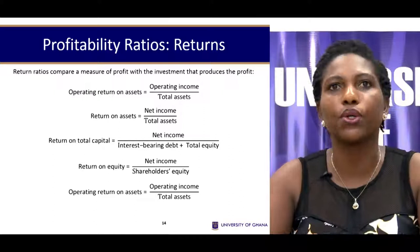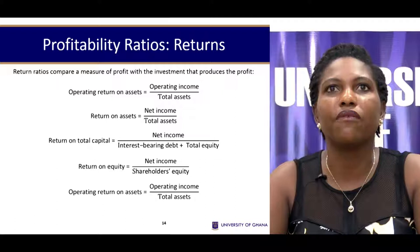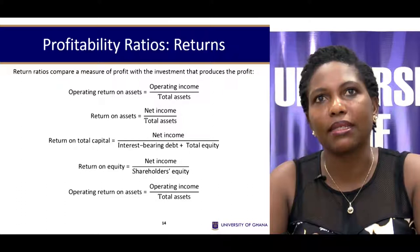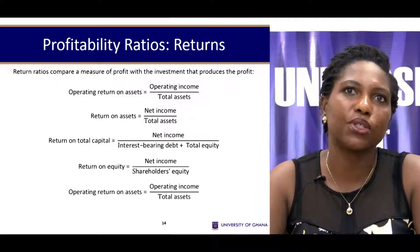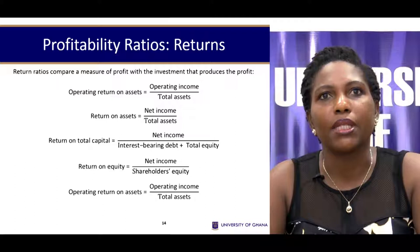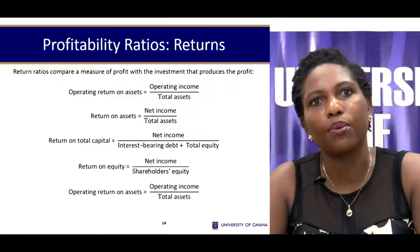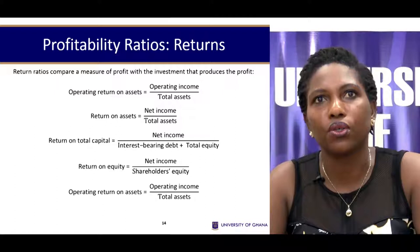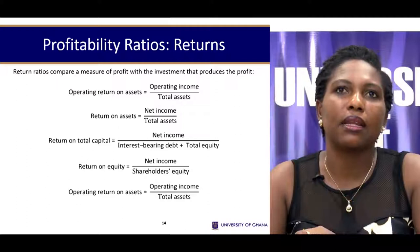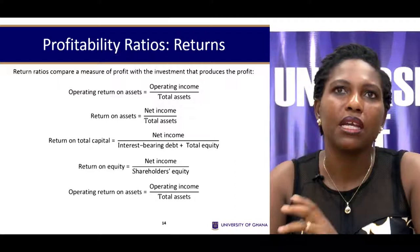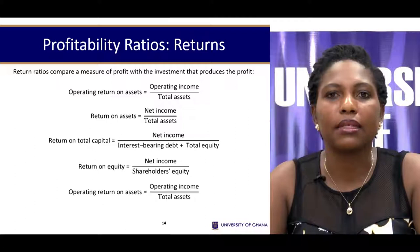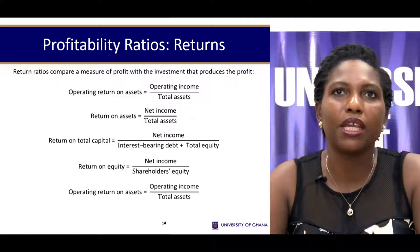Beyond margins, profitability ratios include returns — measuring profit relative to investment. These include operating return on assets (operating income over total assets), return on assets (net income over total assets), return on capital (net income over interest-bearing debts plus total equity), and return on equity (net income over shareholders' equity). If these values are poor, the firm should reexamine its operations and make relevant adjustments.